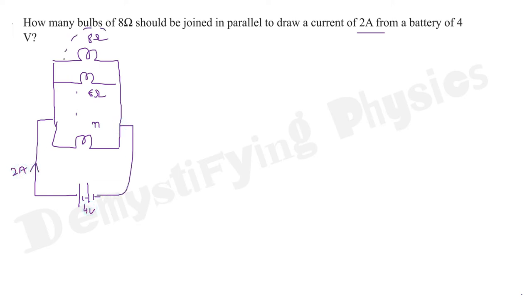Now, let us find the net resistance of this much part. What is the net resistance? 1 by R dash is 1 by 8 plus 1 by 8 plus 1 by 8. Now, how many we don't know. Let it be N. Let there be N bulbs.